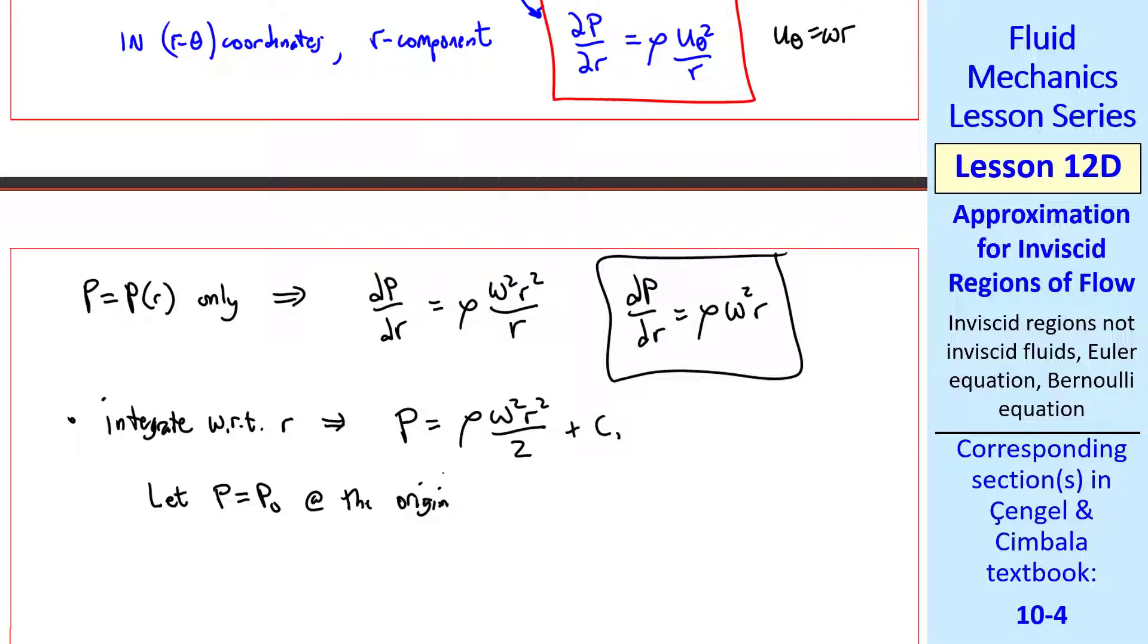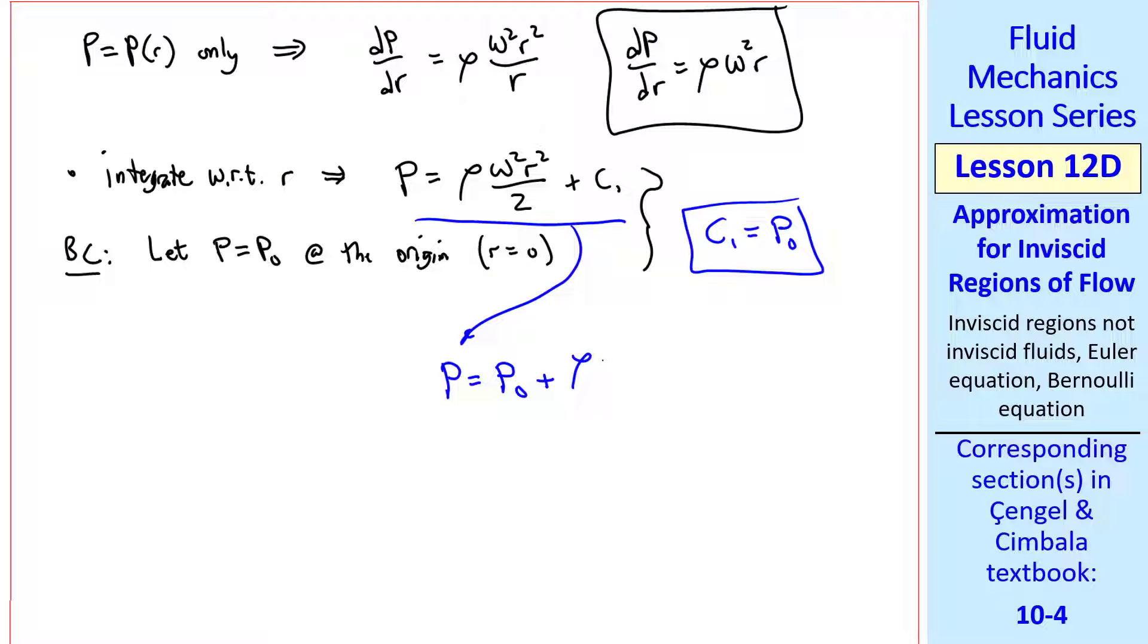This is easily integrated with respect to r. We get rho omega squared r squared over 2 plus some constant c1. We'll let p equal p sub 0 at the origin, in other words where r equals 0. This is a boundary condition, which when plugged into our equation yields c1 equal p0, and thus p equal p0 plus rho omega squared r squared over 2. This is our desired answer.